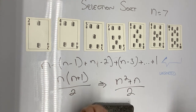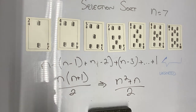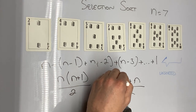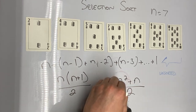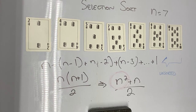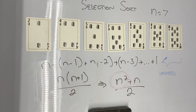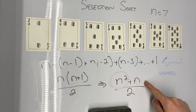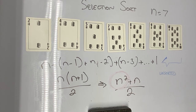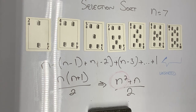As n gets big, what we truly care about is the n squared part of the expression. We say this algorithm is on the order of n squared, meaning as the number of cards doubles, the number of cards we have to look at to sort it quadruples. We don't care about the plus n or the division by two — we're just interested in how this algorithm scales for large values of n. We refer to this as Big O notation, and that's something we'll look into more throughout this chapter.